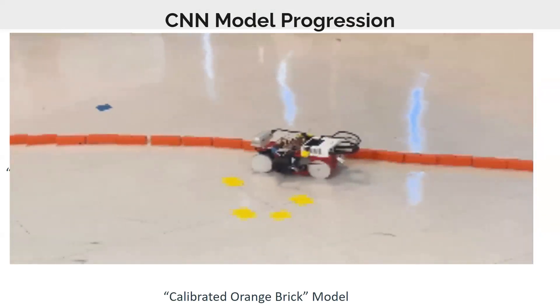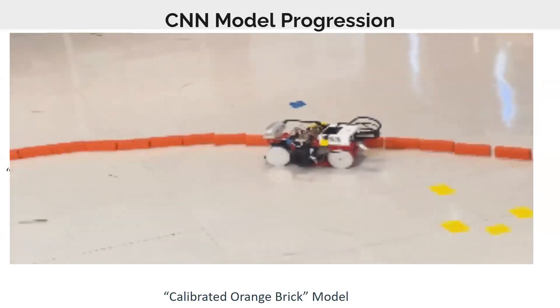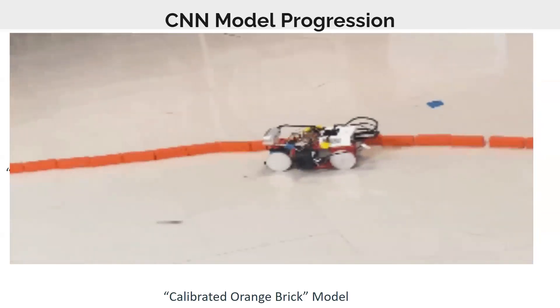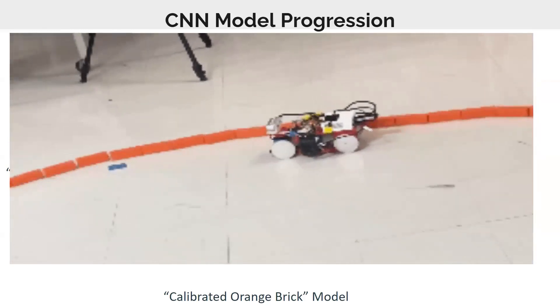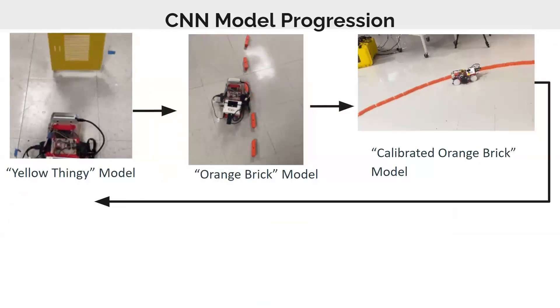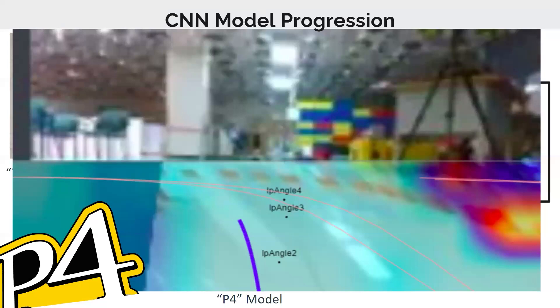And from here, we decided to add in speed to our model. So the model actually outputs the speed. And we changed the output from curves to four look ahead angles. And from that, we got our next model, which is our P4 model.